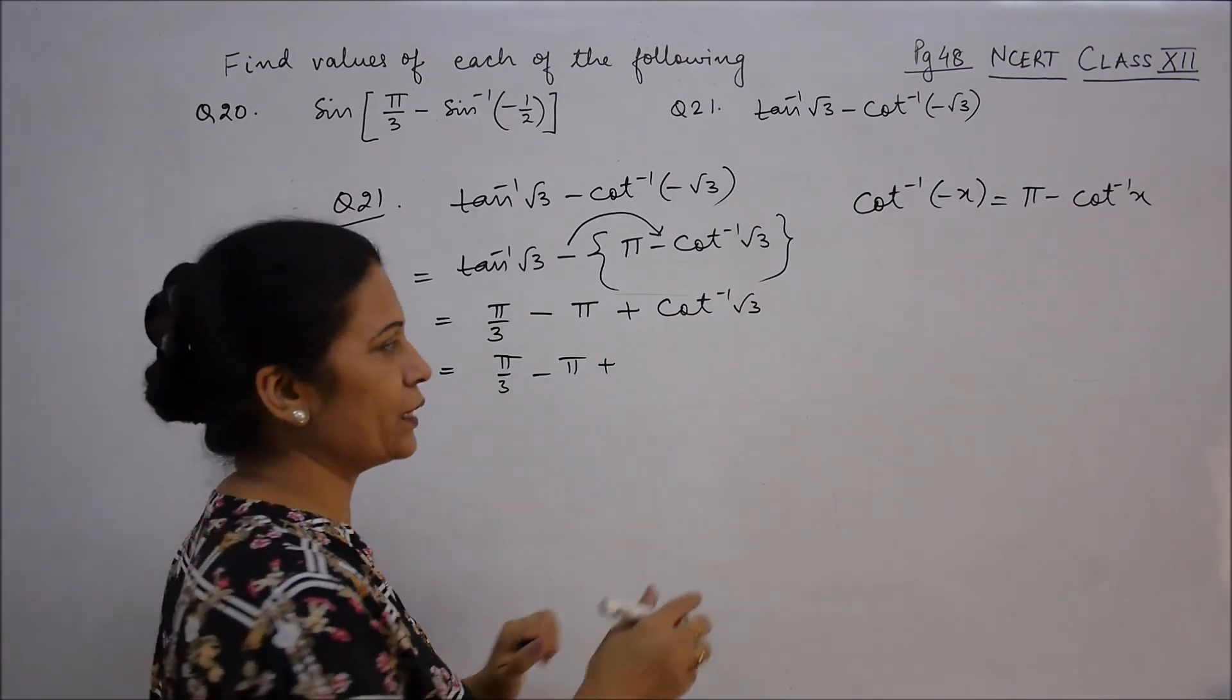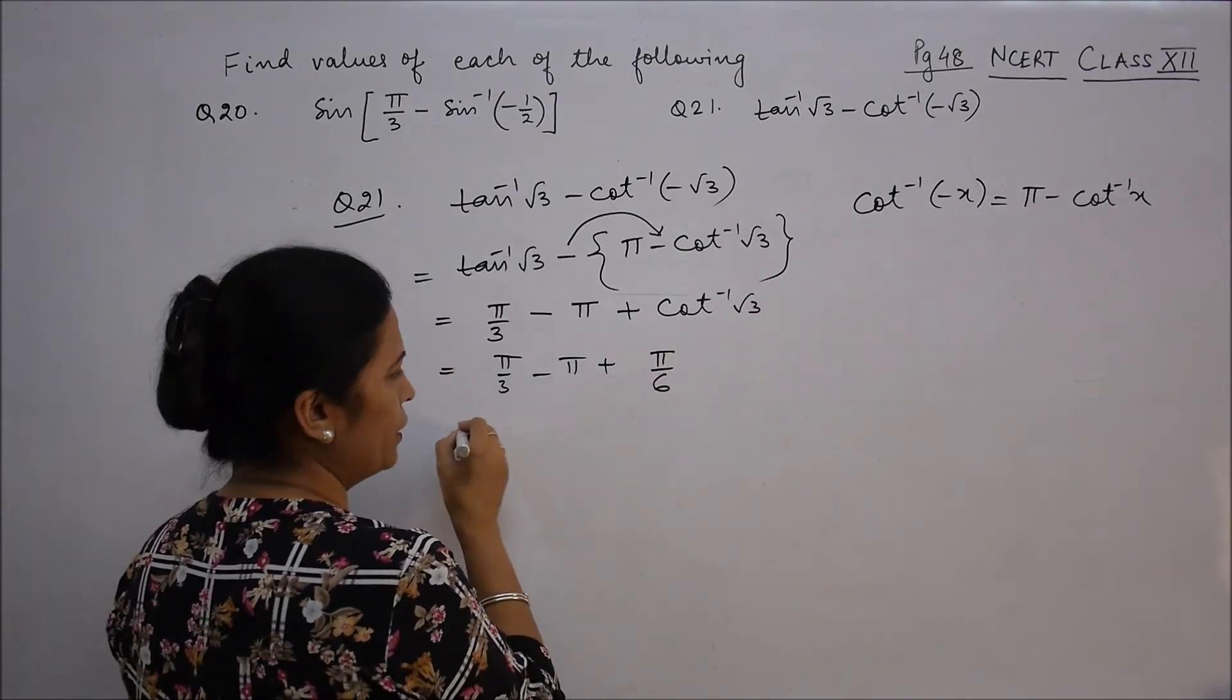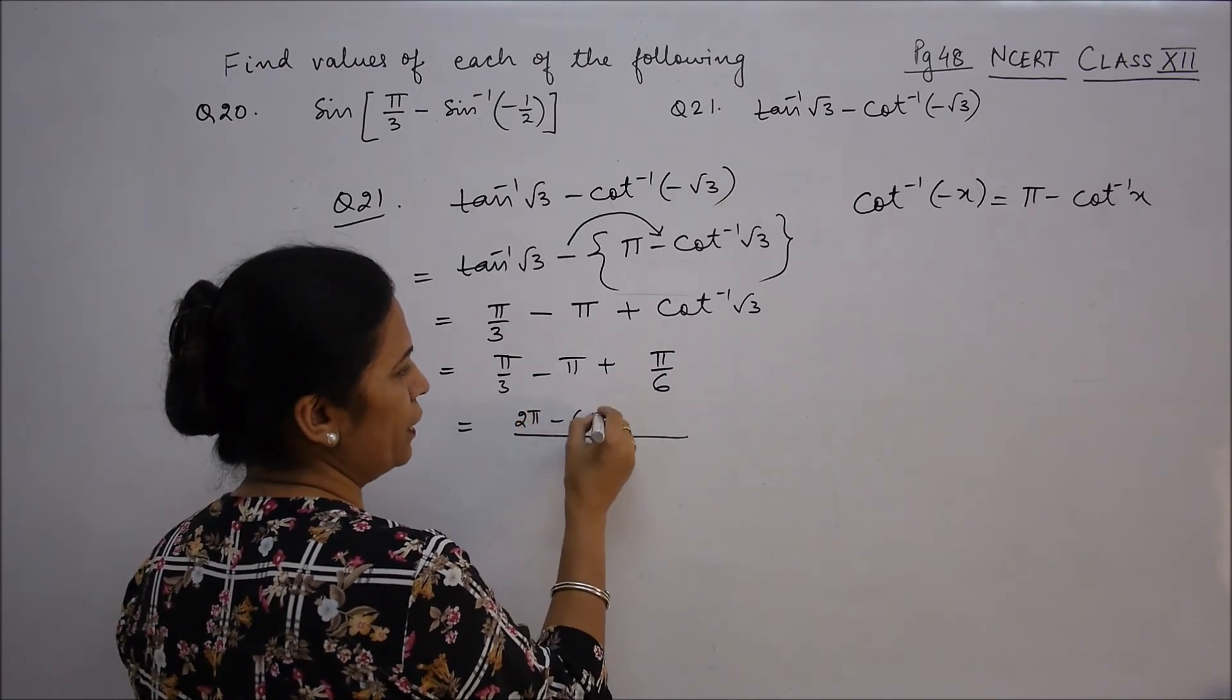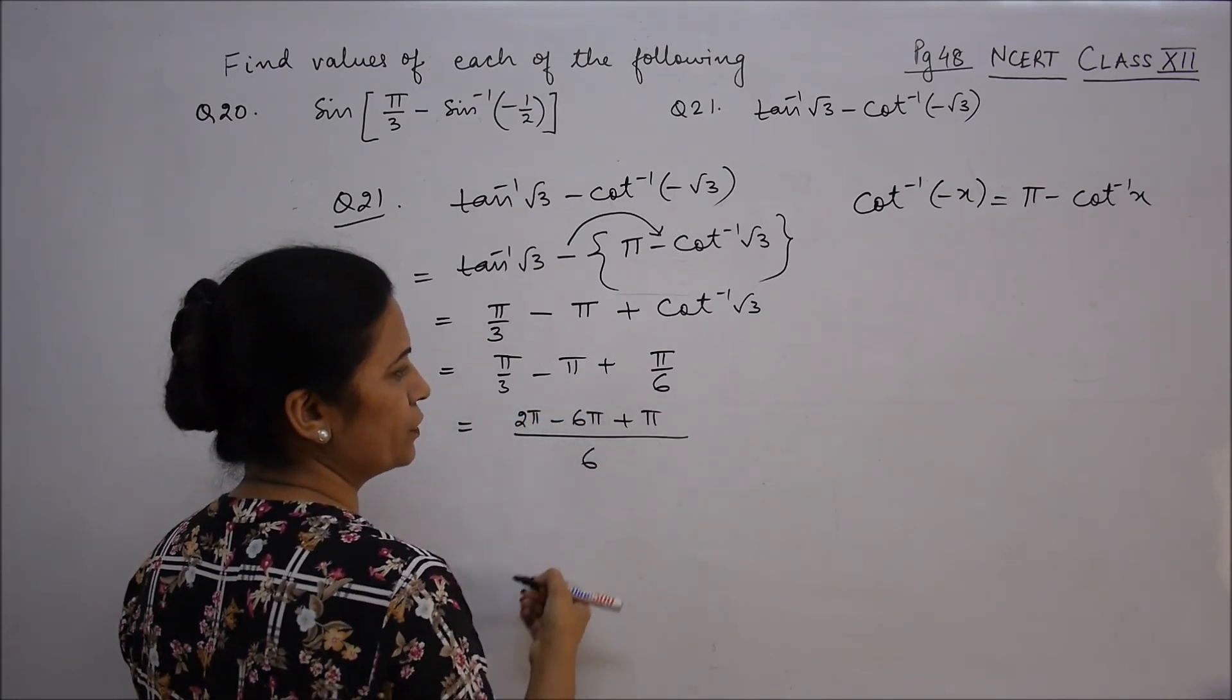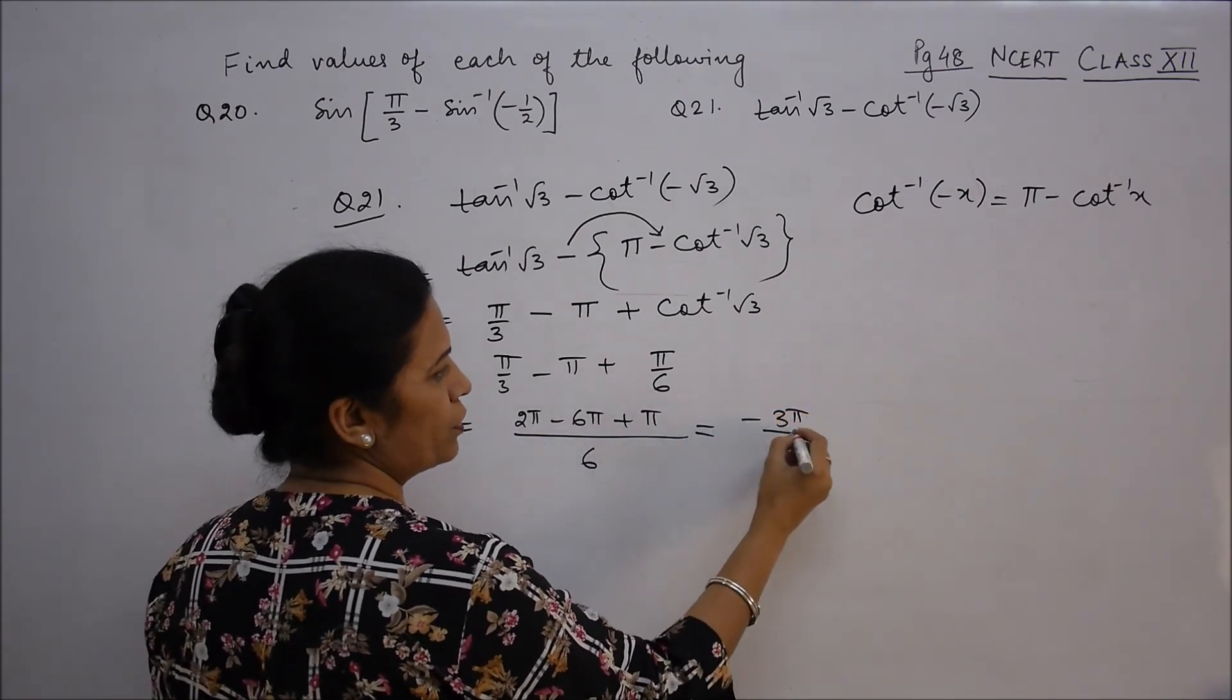So 30 degrees means π/6. Taking LCM as 6, this is (2π - 6π + π)/6, which gives -3π/6.